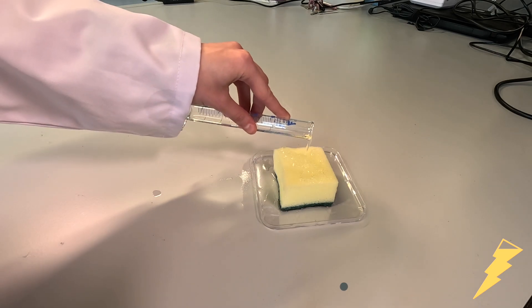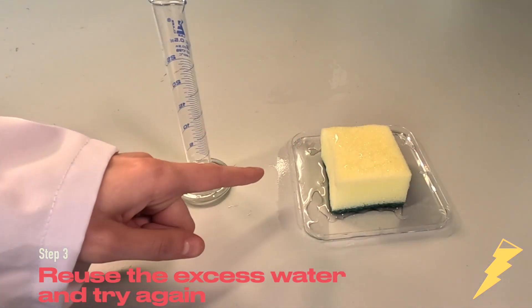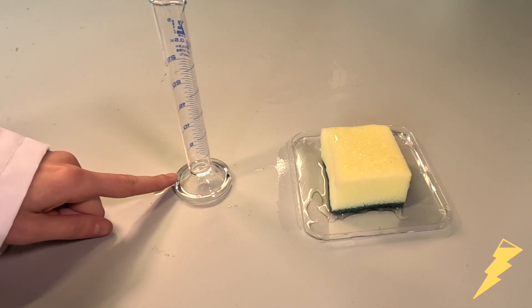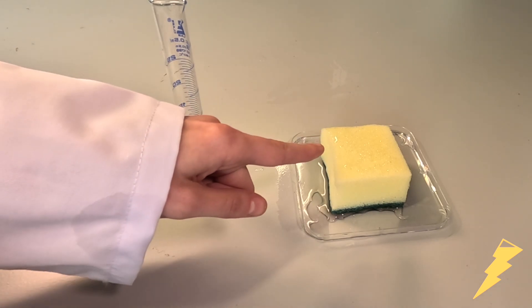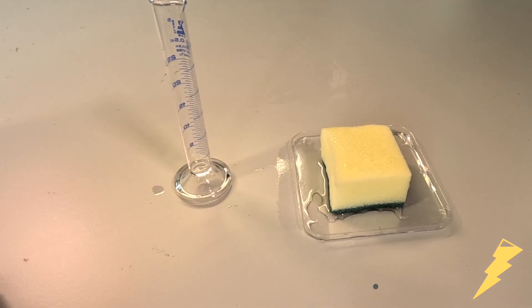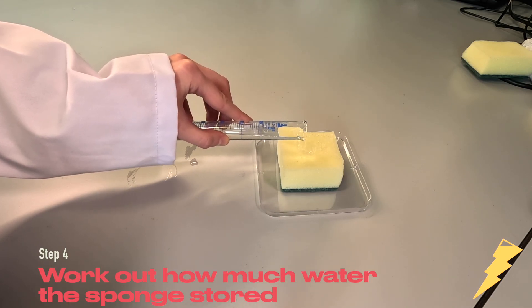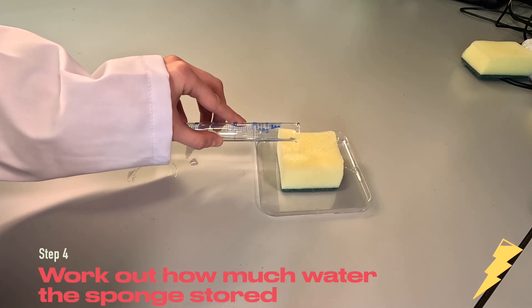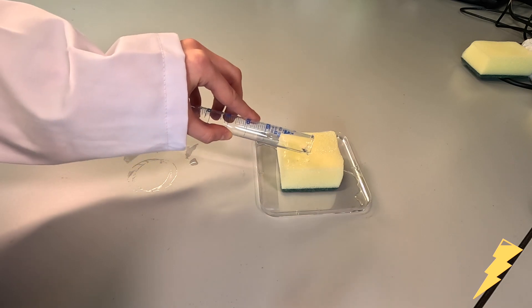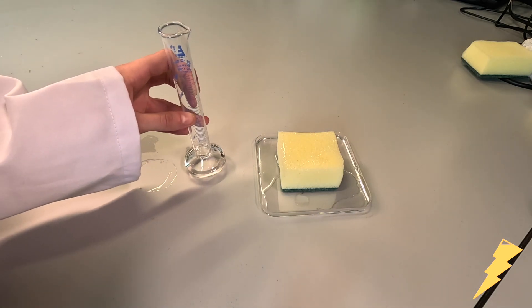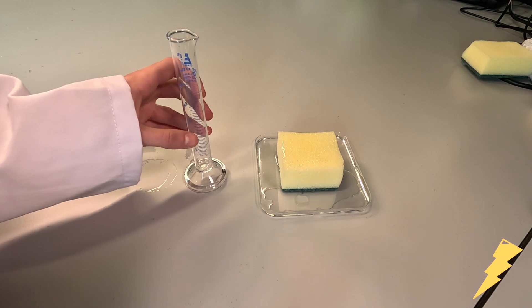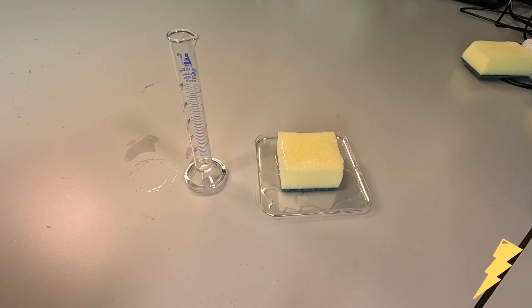If any water has poured out onto the sides you can pour it back into the measuring cylinder and either pour it back onto the sponge or take that into account. Depending on the size of your sponge it will be able to absorb more or less water. You can measure this based on how much water you have put in your cylinder and how much has been taken up.